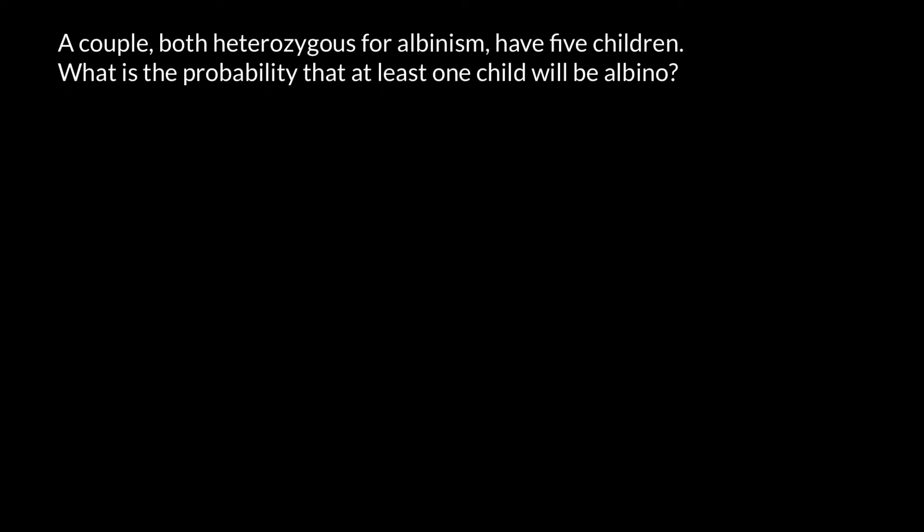Hello and welcome to Nikolai's Genetics Lessons. Today I have prepared an easy probability problem. I hope that most of you would be able to solve this problem, so I recommend you to pause the video here, try to solve it on your own first, and when you're ready, run the video again and compare your answer with mine. Here's the problem: a couple, both heterozygous for albinism, have 5 children. What is the probability that at least one child will be albino?